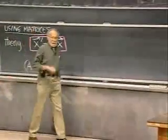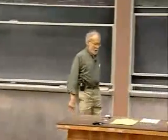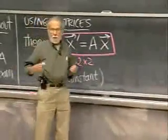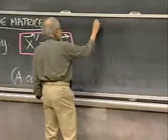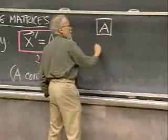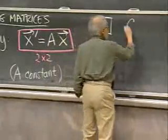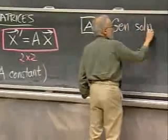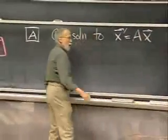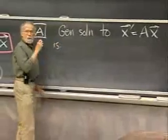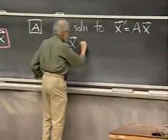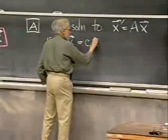There are two theorems, or maybe three, that I want you to know, that you need to know in order to understand what is going on. The first one, fortunately, is already in your bloodstream, I hope. Let's call it Theorem A. It is simply the one which says that the general solution to the two-by-two system is a linear combination with arbitrary constants for the coefficients of two solutions.